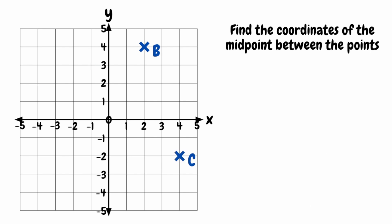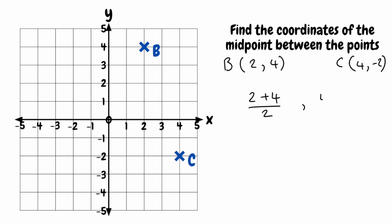For this next question, we want to find the midpoint between the points of B and C. Our coordinates for B would be 2, 4, and our coordinates for C would be 4, negative 2. Substituting into our midpoint formula, we're going to add our x-coordinates together, so we'd be doing 2 plus 4 divided by 2. Adding our y-coordinates together, we've got 4 plus negative 2. A positive and a negative makes a negative, so this is the same as doing 4 take away 2, still divided by 2.